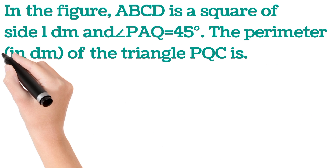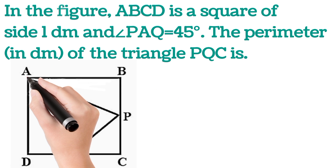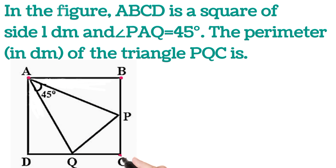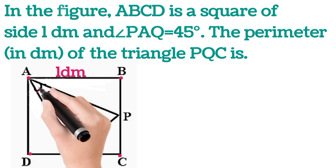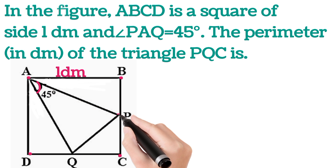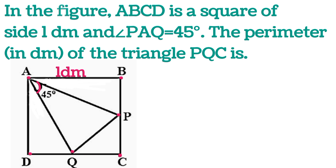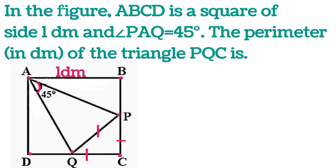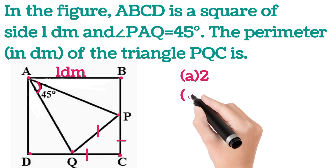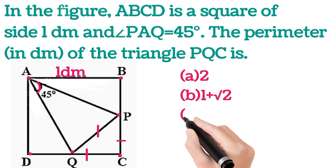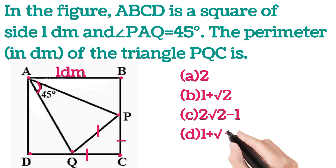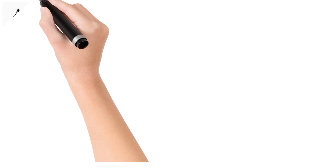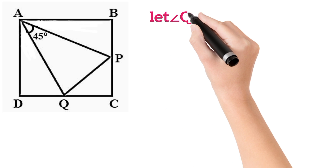Hello everyone, welcome back once again. Here is another competitive exam question: ABCD is a square of side 1 dm, and angle PAQ is 45 degrees. We have to find the perimeter of triangle PQC — that is, this side, this side, and this side. The options are: A) 2, B) 1 + √2, C) 2√2 − 1, D) 1 + √3. Let's see how to solve this.